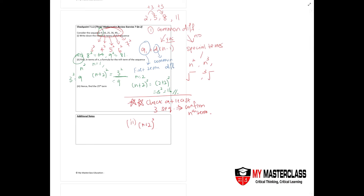Part 3 is more straightforward. Now that you have your nth term formula, when n equals 25 — the 25th term — substitute into (n plus 2) squared: 25 plus 2 squared equals 27 squared. Press that into your calculator and you get 729. That is your final answer.